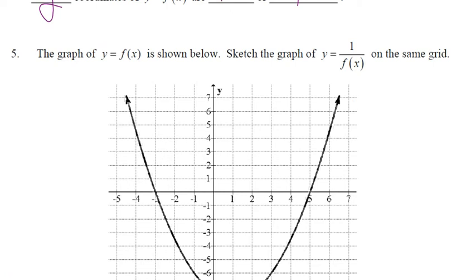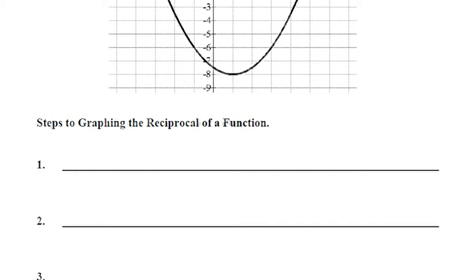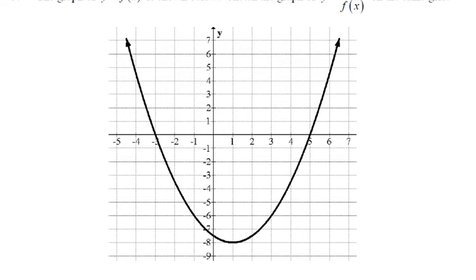The graph of y = f(x) is shown below. Sketch the graph of y = 1/f(x) on the same grid. Here's how we graph the reciprocal. The first step is to find the zeros of the original function and draw in an asymptote line.